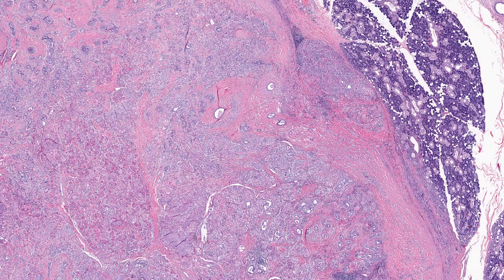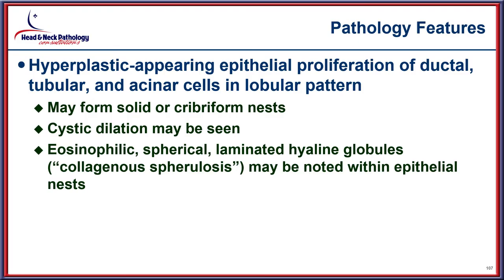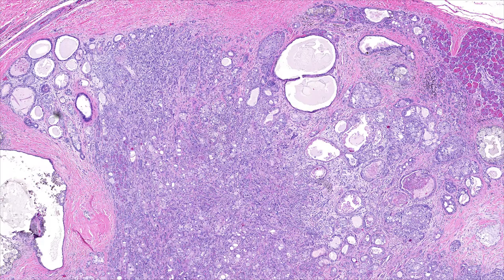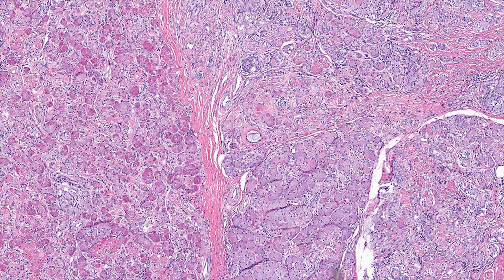Examples show well-circumscribed lesions, sometimes with nodularity extending into the periphery. Marked cystic dilatation with a haphazard proliferation is typical. The hyperplastic appearance of the epithelium gives rise to the name, reflecting ductal, tubular, and acinar proliferations with laminated hyaline globules present. Multiple areas of dilated epithelium as well as tubular and ductal spaces, with heavy sclerosis adjacent to the proliferation, are easily identified.